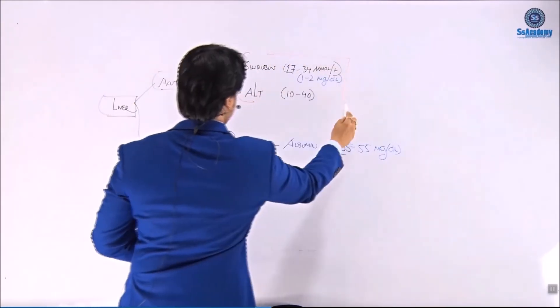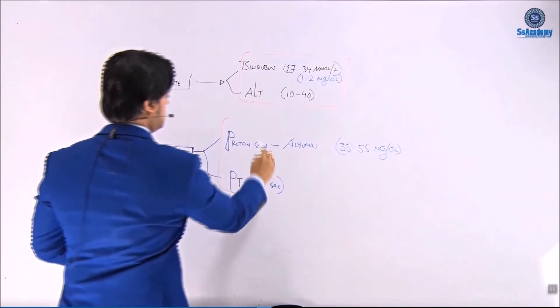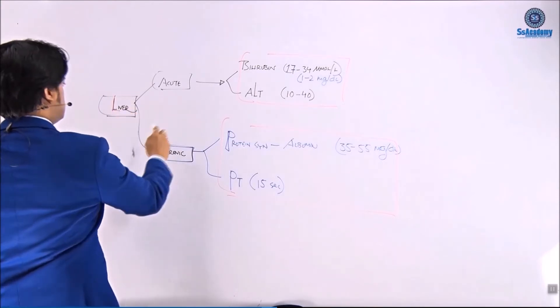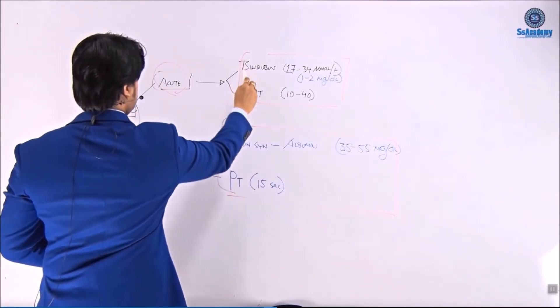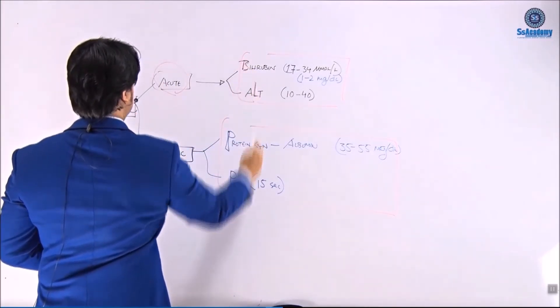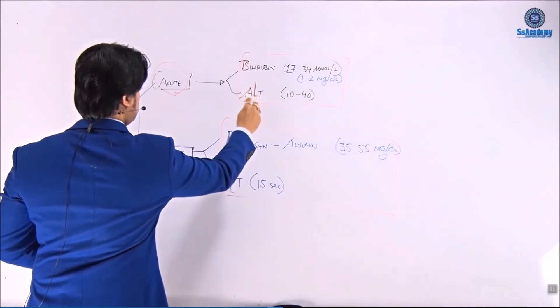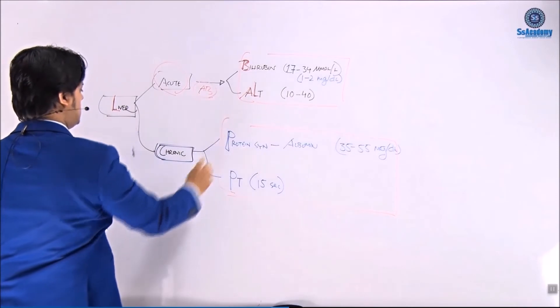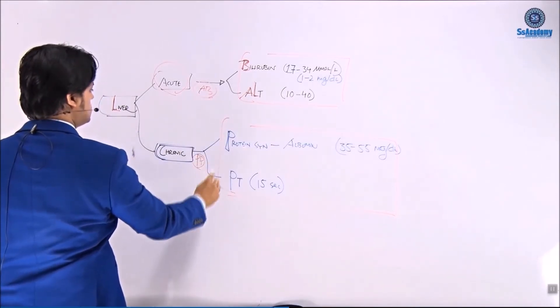So my dear, listen very carefully the thing that we have written here that is really important. So this is the acute function box and this is the chronic function box. So once again the liver acutely producing the bilirubin and ALT. So acute is ALT and bilirubin, A and B. And chronic is a PP function.